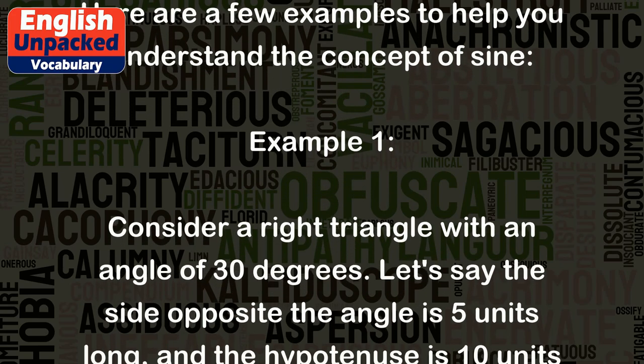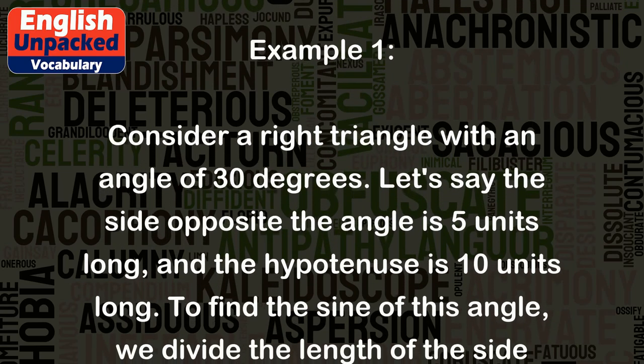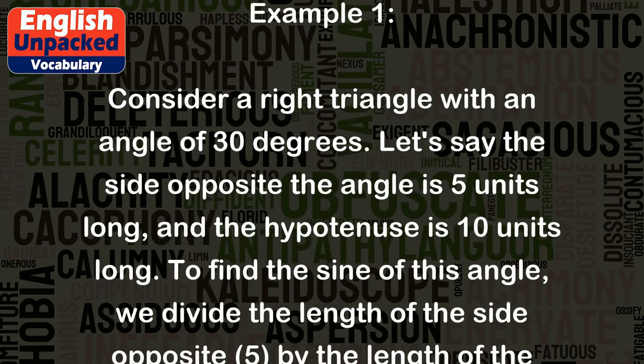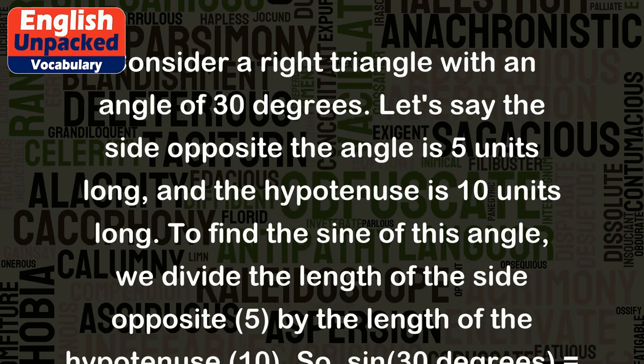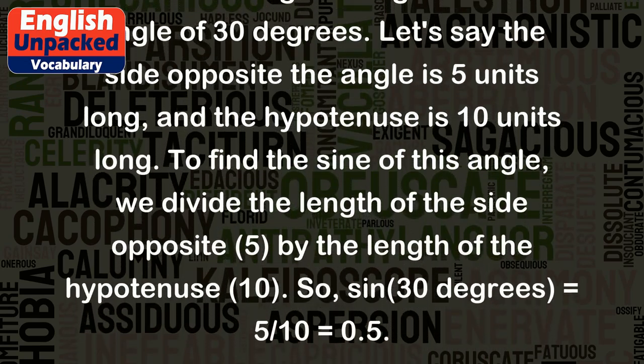To find the sine of this angle, we divide the length of the side opposite (5) by the length of the hypotenuse (10). So, sin(30 degrees) = 5/10 = 0.5.